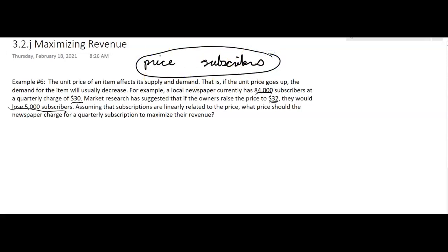We have two ordered pairs. You could think of it as a graph. When we were charging $30, we had 84,000 subscribers. But when we charged $32, that was going to go down by 5,000, so it was going to go down to 79,000.